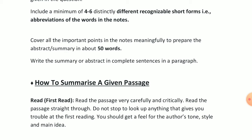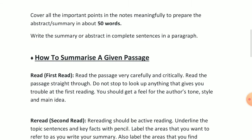Include a minimum of four to six distinctly different, recognizable short forms — that is, abbreviations — in the notes. You can use many abbreviations and symbols while constructing the note-making format, but finally select only four to six, box them, and close the box with pencil. Four is the minimum, six is the maximum — not more than that.